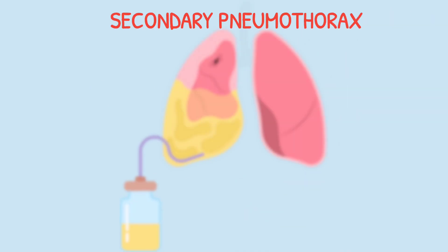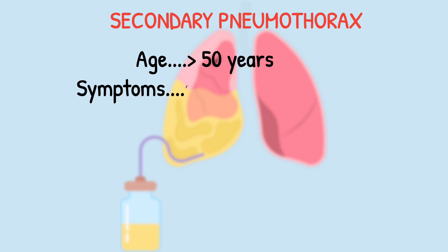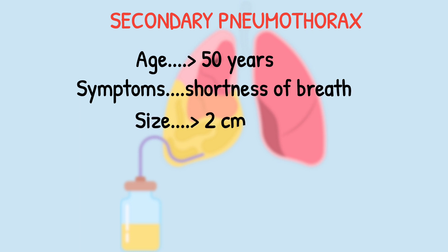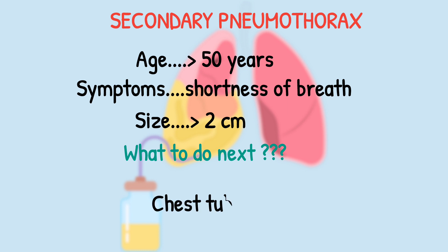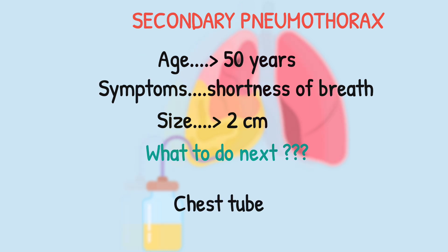If the age is more than 50, the patient is very short of breath or having chest pain, and the size is more than two centimeters — again, always intervention. In this case, we go straight to a chest tube.